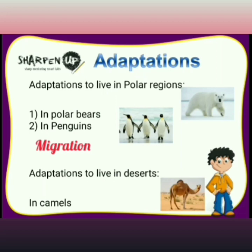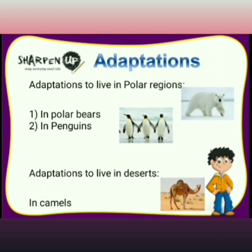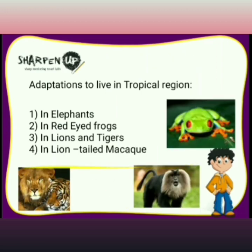Migration is the mass movement of animals to escape harsh weather, search for food, or for breeding purposes. For example, Siberian cranes come to India from Siberia every year for a few months and fly back to Siberia when winters end and the climate becomes favorable.